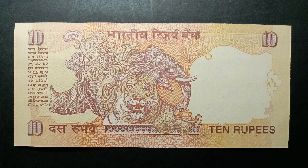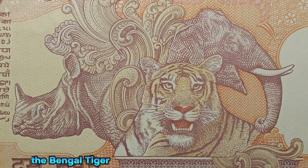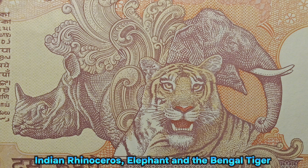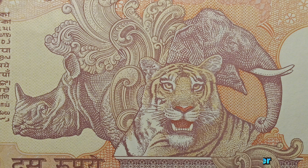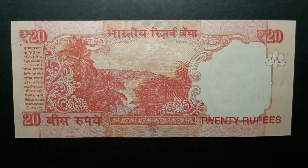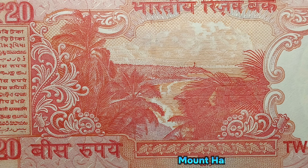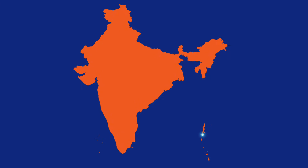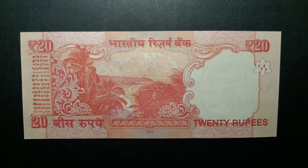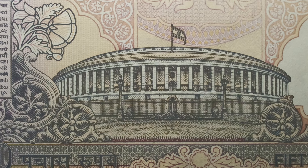The reverse of the 5 rupee note features a farmer ploughing a field with a tractor. The 10 rupee features an Indian rhinoceros, elephant and the Bengal tiger in the centre. The 20 rupee features a view of Mount Harriet National Park, which is located in the Andaman and Nicobar Island region.